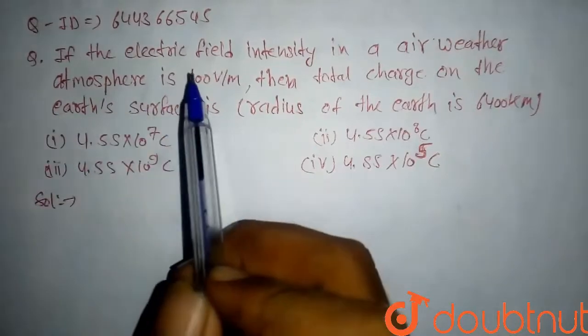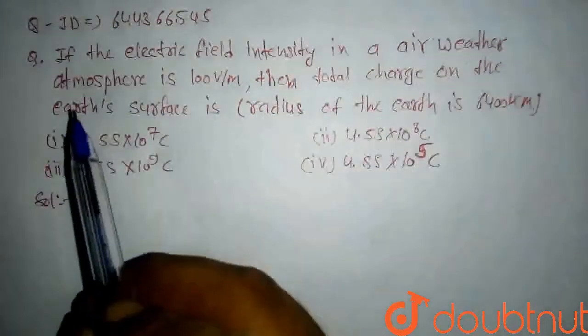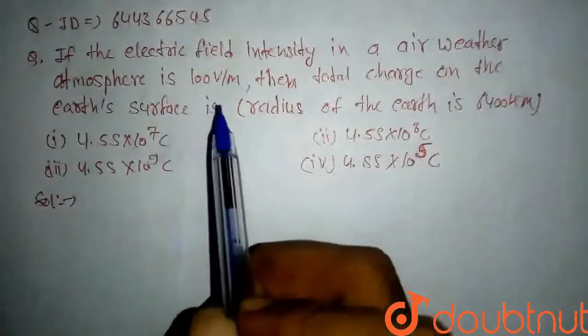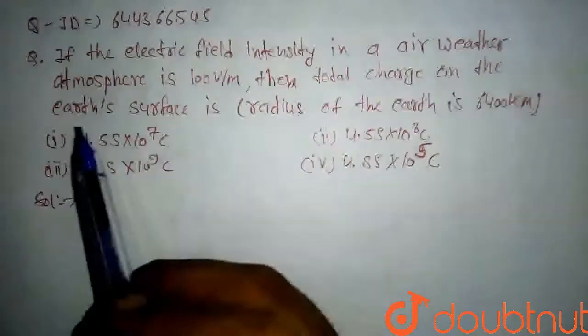If the electric field intensity in air weather atmosphere is 100 volt per meter, then total charge on the earth surface is?